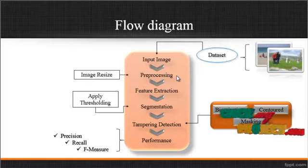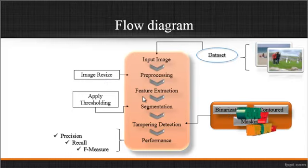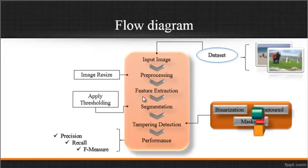In the preprocessing step, image resizing is carried out. The image is resized into an aspect ratio by reducing the input row and column dimensions. After that, feature extraction is carried out. In the feature extraction step, we extract features like SIFT features and block features from the image.